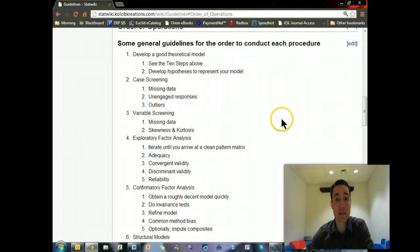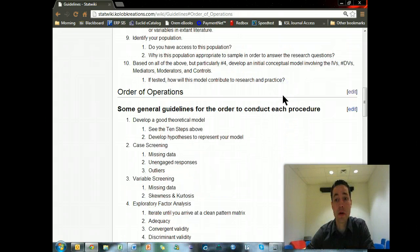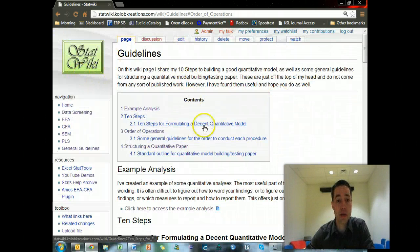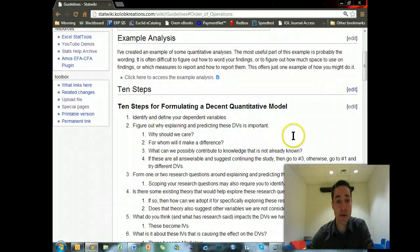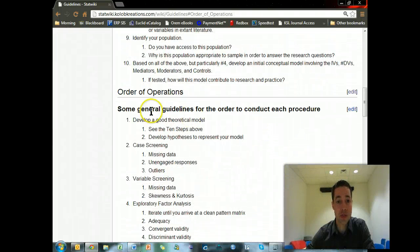so that if you'd like you can follow along and make sure you're doing it right and getting the same results. I've put together on the wiki, the stat wiki, in the general guidelines area, a new section called Order of Operations, and I'll be using this as a guide.